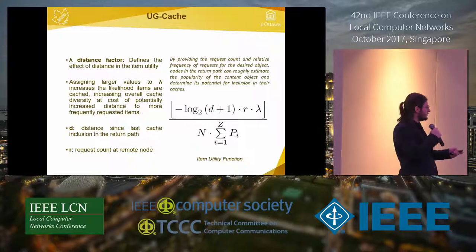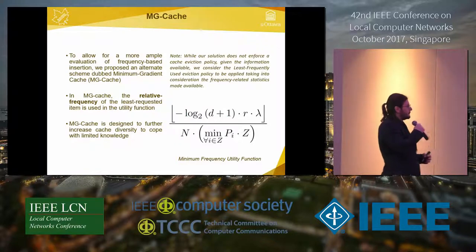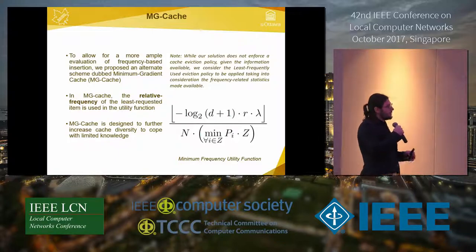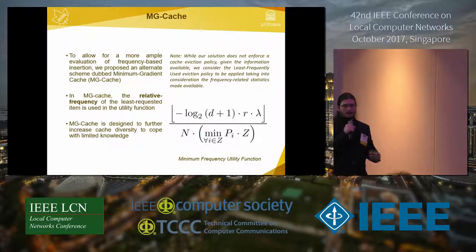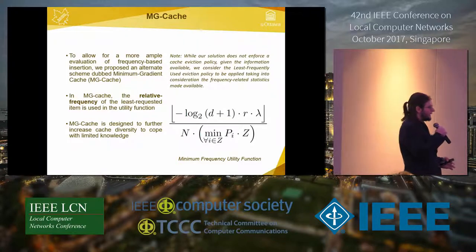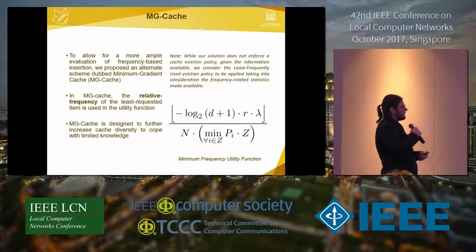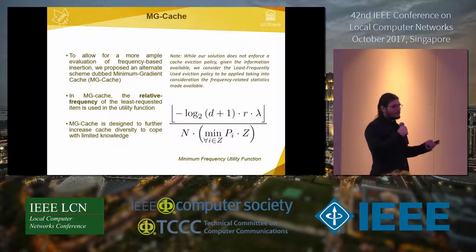We also define a variant called Minimum Gradient Cache (MG cache) to provide a broader comparison. Instead of evaluating the individual probability of each item in the local cache, it uses the relative frequency of the least-requested item in the utility function, increasing cache diversity further by raising the likelihood that an item is eligible for caching. We consider a Least Frequently Used eviction policy, as we have access statistics available.